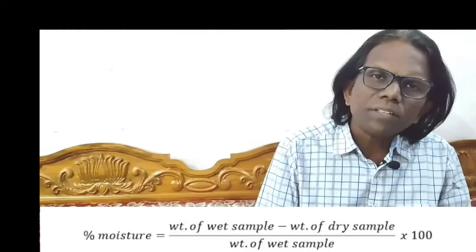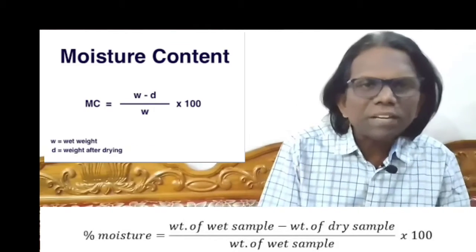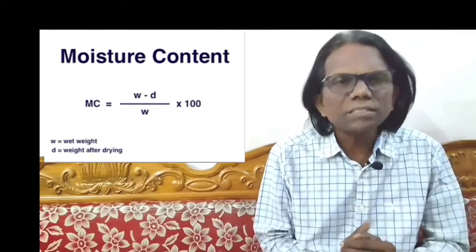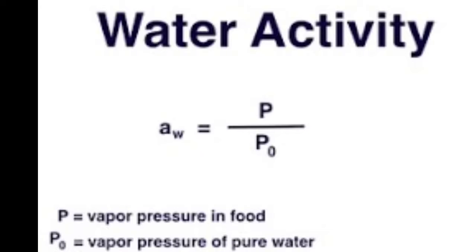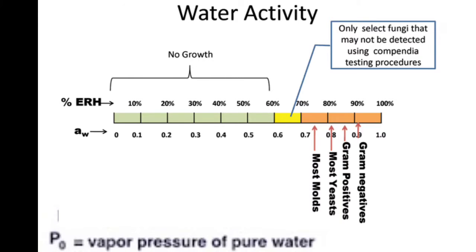The formula for moisture content is: wet weight of the product minus dry weight of the product, divided by wet weight, multiplied by 100 — this gives the percentage of moisture content in the product. Whereas the formula for water activity is: ERH divided by 100, where ERH is the equilibrium relative humidity — this gives the water activity.